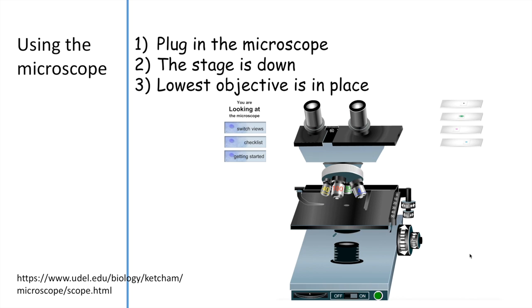The first step is that you want to plug in the microscope. There are different kinds of microscopes. Some microscopes just use sunlight and do not use electricity. The microscopes that are in most classrooms today have artificial light and therefore need electricity. So there is a plug, you just want to plug that in.